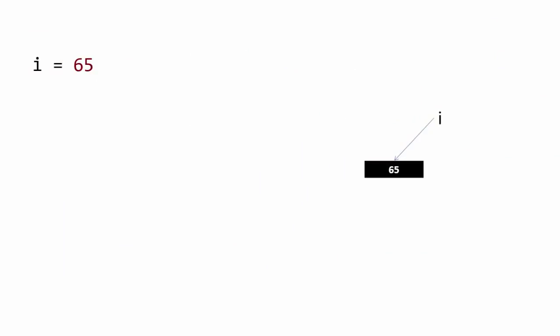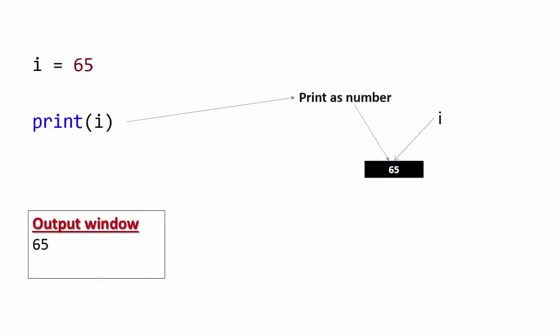Consider a variable i assigned with value 65. If we print this as a number, then output window shows number 65. Now if we cast it to character data type and print, then we see its ASCII equivalent character that is A.